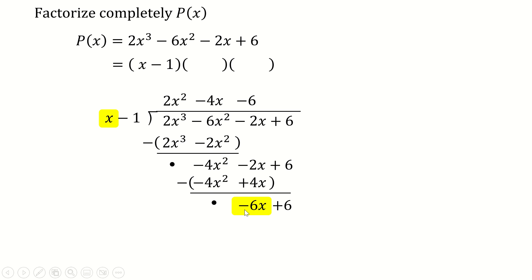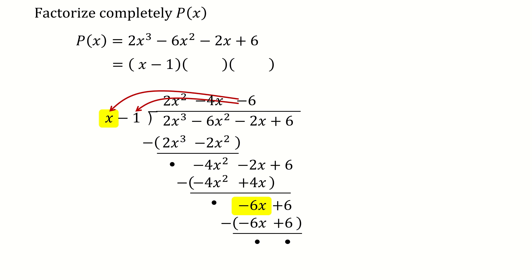For the final step: to get -6x, we multiply x by -6. Then -6 times x = -6x and -6 times -1 = +6. Subtracting gives zero remainder, which confirms that x minus 1 is indeed a factor of the polynomial.